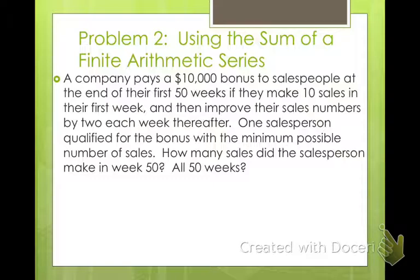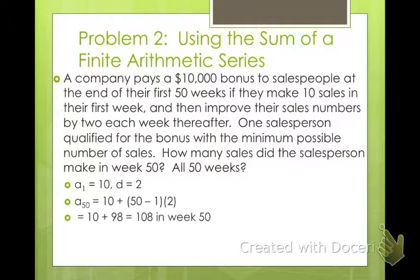One salesperson qualified for the bonus with the minimum possible number of sales. How many sales did the person make in week 50 and then in all 50 weeks? If we want to look at specifically week 50, we need to make an equation. If we know a sub 1 is 10 and our common difference is 2, we can plug that into our arithmetic sequence formula. a sub 50 is a sub 1 plus n minus 1 times d. If you simplify that, you get 49 times 2 plus 10. So in the 50th week, that particular salesman made 108 sales.